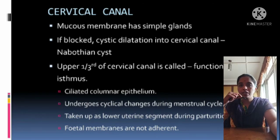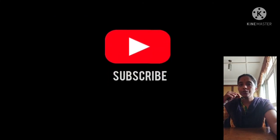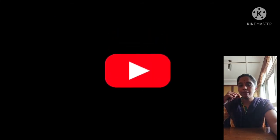The upper one third of the cervical canal is called the functional isthmus. It is lined by ciliated columnar epithelium before puberty. It undergoes cyclical changes during the menstrual cycle and is taken up as the lower uterine segment during parturition. The fetal membranes are not adherent to the lower uterine segment. Thank you.